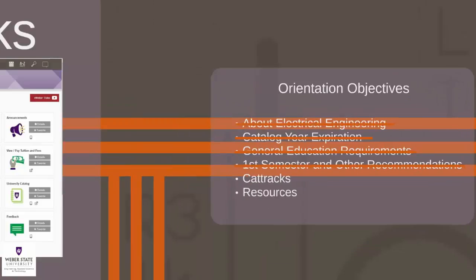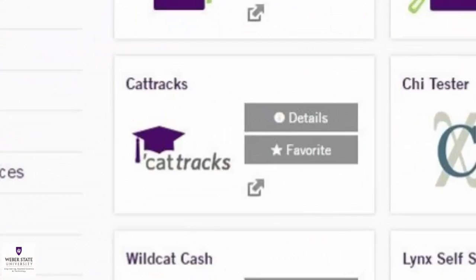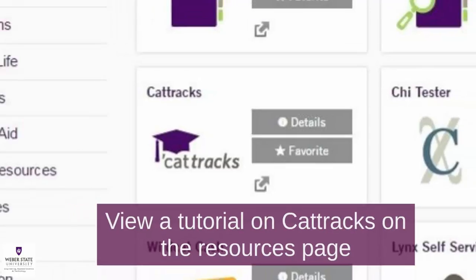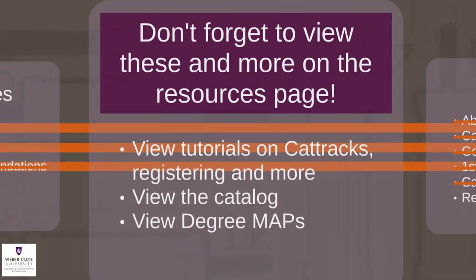CatTracks is a web-based tool with an easy-to-read worksheet that helps track your progress towards your degree and is available through the eWeber portal. The program combines degree requirements with the coursework already completed to show what requirements are remaining. CatTracks can be found in your eWeber portal. At this time, you will want to return to the East Advising website and click on the Advising Resources page for a list of web links that were referred to in this presentation.